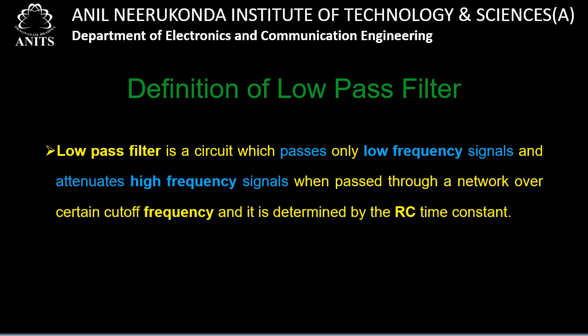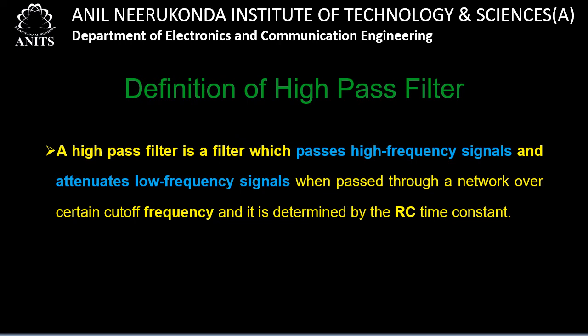Similarly, the high pass filter passes only high frequency signals and attenuates low frequency signals. The cutoff frequency is again given by 1/(2πRC). Anything above the cutoff frequency is passed by the high pass filter, and anything below is rejected.